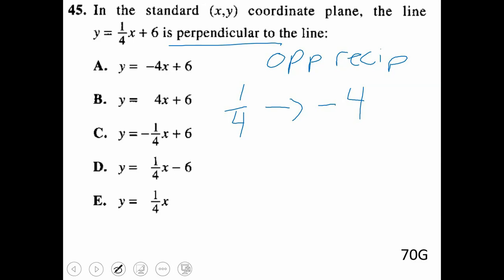Now that y-intercept of plus 6 in the problem does not mean anything. Perpendicular and parallel is based only on slope. So I do want to point out, if they were to ask you about parallel lines on this, answer choices D and E would have been your parallel slopes.